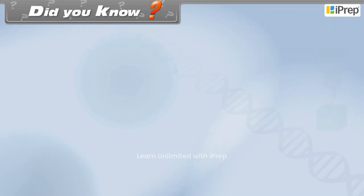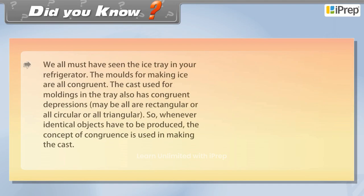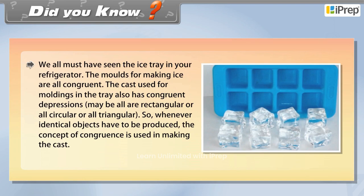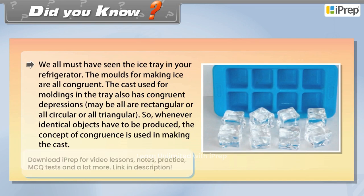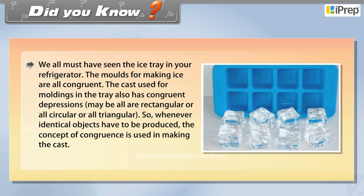Did you know — we all must have seen the ice tray in your refrigerator. Observe that the molds for making ice are all congruent. The cast used for molding in the tray also has congruent depressions — maybe all are rectangular, or all circular, or all triangular. So whenever identical objects have to be produced, the concept of congruence is used.